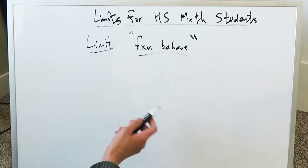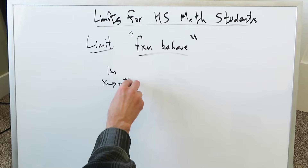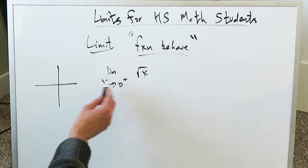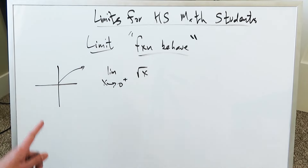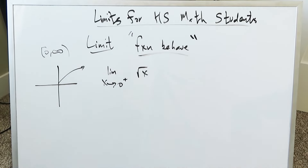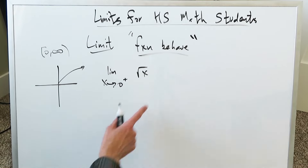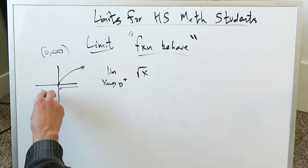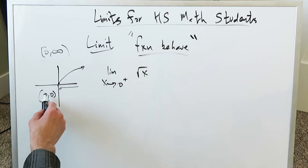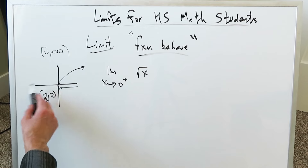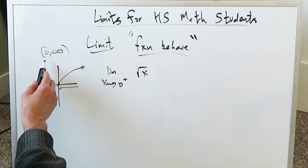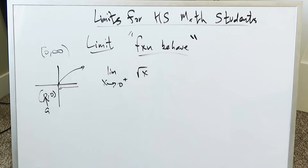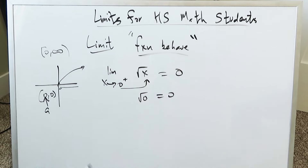Another one-sided limit example: limit as x approaches 0 from the right of √x. The graph of √x starts at the origin and goes toward positive infinity, with no involvement of negative x values — you can't take the radical of a negative without getting an imaginary number. So you can only approach x = 0 from the right; there is no domain on the left side. The answer is straightforward: plug in 0, you get √0 = 0. This is a right-sided limit.